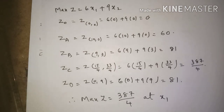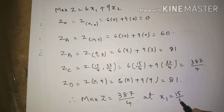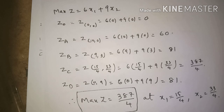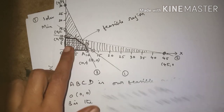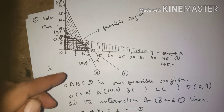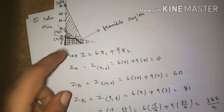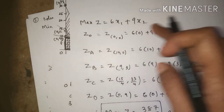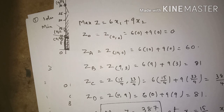Therefore, max z equals 387/4 at the point C, where x1 equals 15/4 and x2 equals 33/4. This is the maximum value. To summarize: draw the graph, find the feasible region, identify any unknown corner points, substitute all vertices into the objective function, and the highest value gives the maximum.